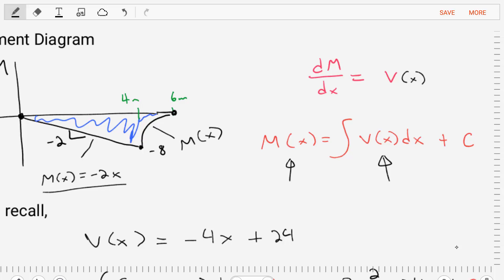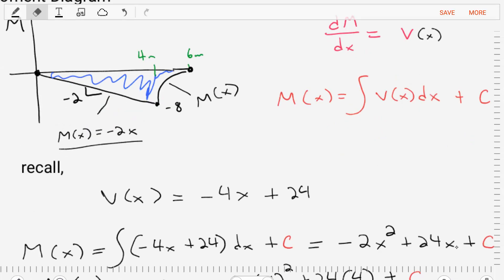And then we will find the exact equation for the portion from four to six meters. And this equation is nonlinear. This is going to be a nonlinear equation. So once we find it, we probably want to plot it in our calculators.